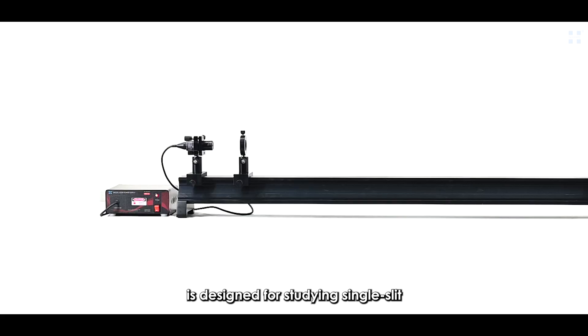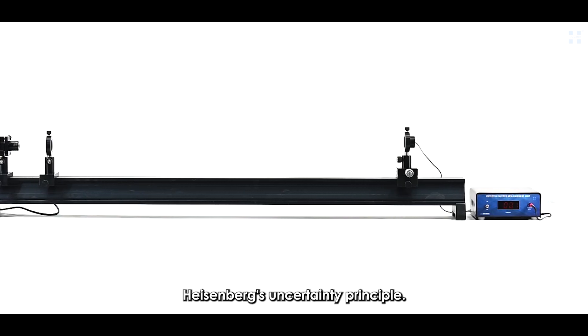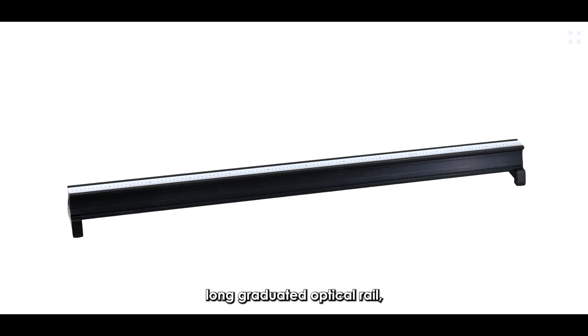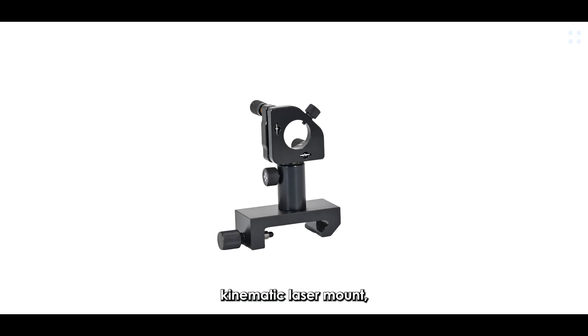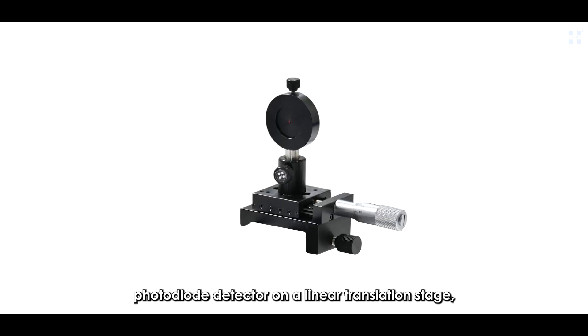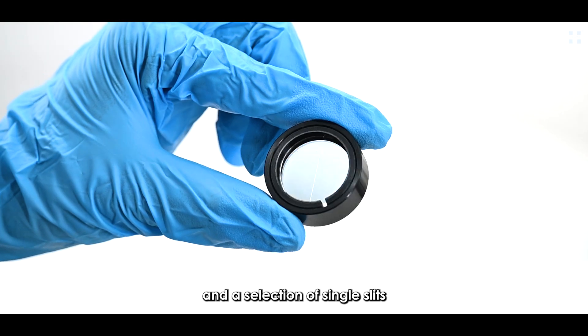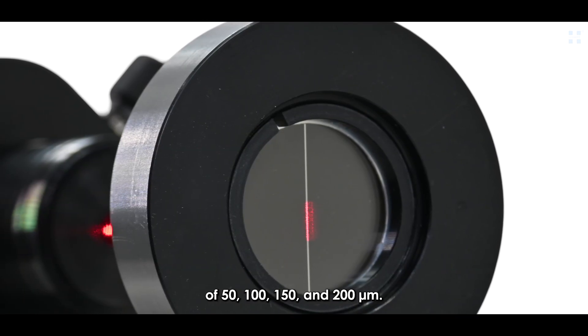Hollmark's apparatus for single slit diffraction and Heisenberg's uncertainty principle, model HOEDD-02A, is designed for studying single slit diffraction patterns and demonstrating Heisenberg's uncertainty principle. The apparatus includes a 1,200 mm long graduated optical rail, diode laser with power supply, kinematic laser mount, cell mount, photodiode detector on a linear translation stage, detector output measurement unit, and a selection of single slits of 50, 100, 150, and 200 micrometers.